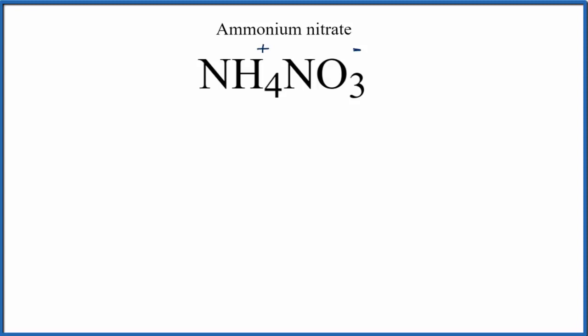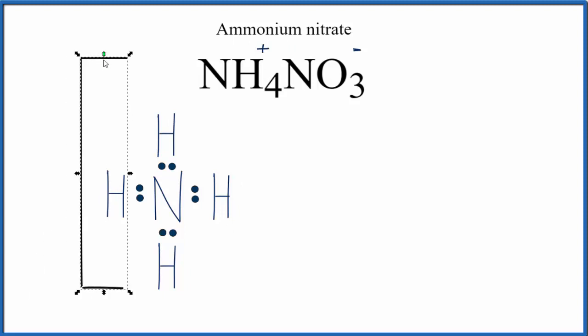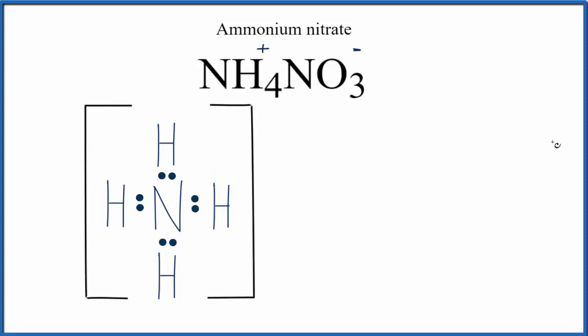So for NH4 plus, the ammonium ion, we'll have a Lewis structure that looks like this. And you can see how I got that, there's a link in the description of this video. We do need to have our plus here though, so we're going to put brackets around this so we can show that it's an ion and it has a plus charge. And then we'll write our plus right here outside of the brackets.